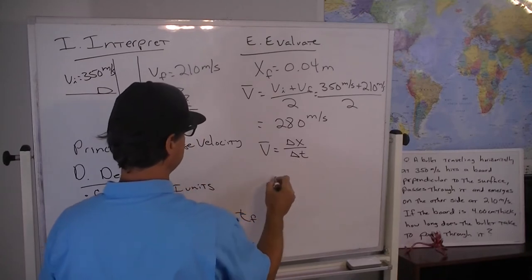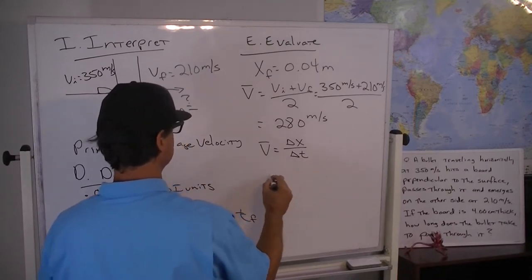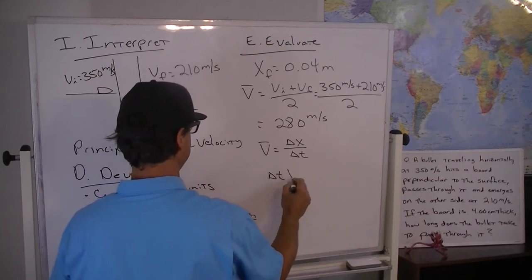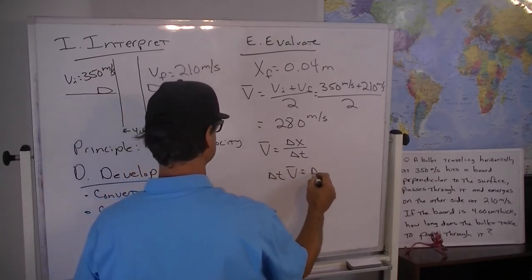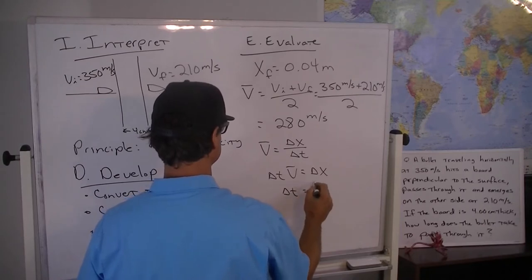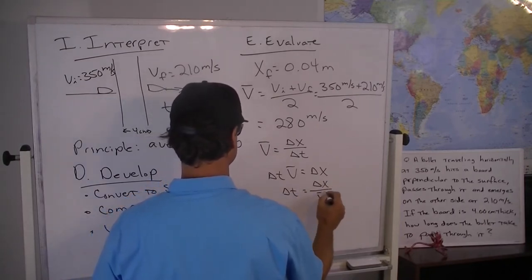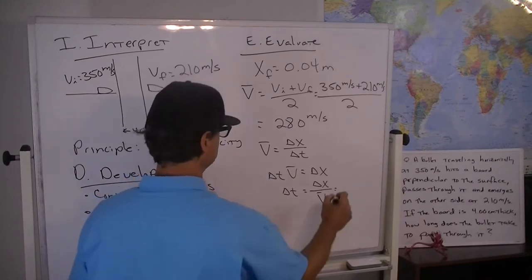So to solve for the change in time multiply both sides by Delta T. Delta T times V average is Delta X. One more step: change in time is equal to Delta X over V average. So this is the 0.04 meters divided by the 280.